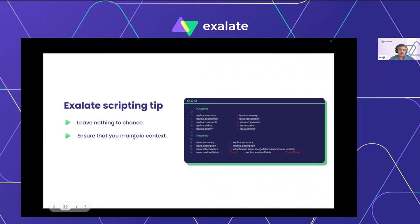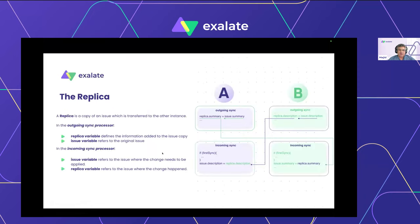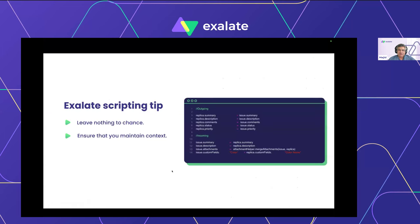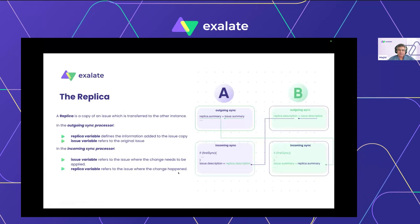This relates to the second point: maintain context. There are so many moving parts in an integration — you need to understand where the transaction is and which part you're troubleshooting. 'Leave nothing to chance' means thinking about outliers — values you're not expecting that the other side might still throw at you and break your script. The most important concept to understand is the replica — it's at the heart of what Exalate does.